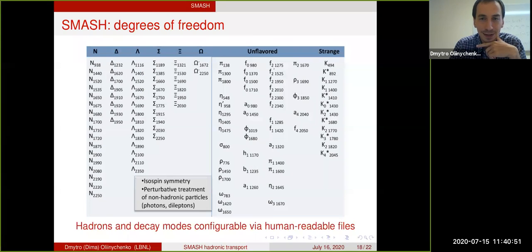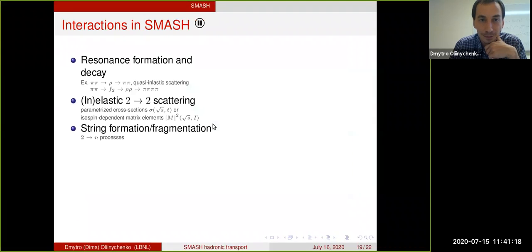These are all the degrees of freedom. In a way it's advertising, just showing many degrees of freedom. It's probably more than in any other transport code. The nice part of this is that all the degrees of freedom, all the hadrons that can fly in SMASH, are configurable via human-readable files. So you don't have to dig into the code to add a new resonance. You can actually just edit in the text file.